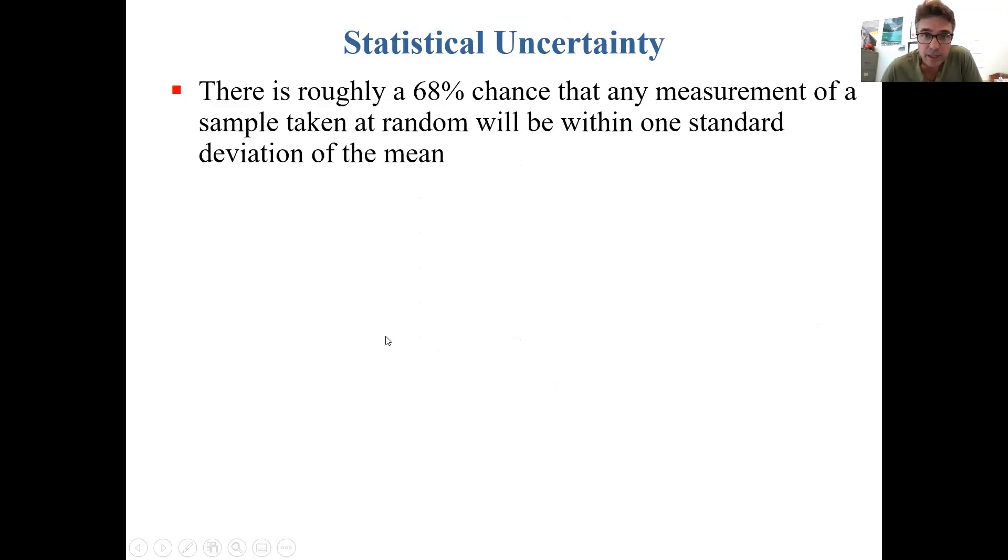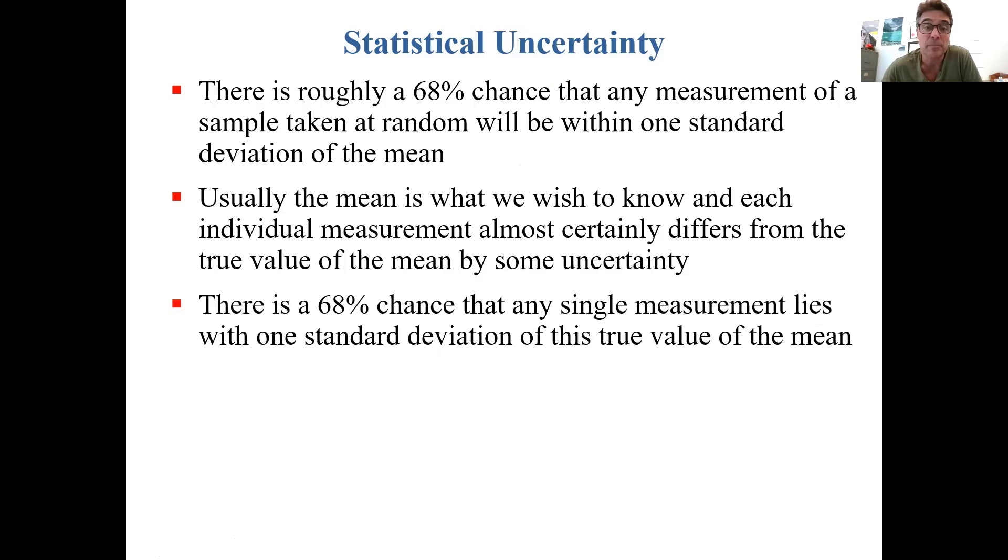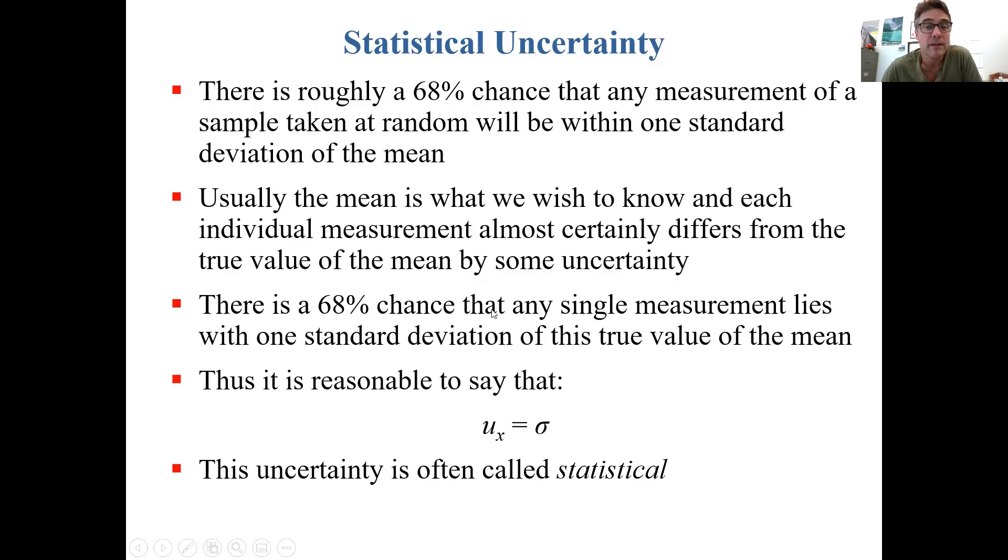There is roughly a 68% chance that any measurement of a sample taken at random will be within one standard deviation of the mean. Usually the mean is what we wish to know, and each individual measurement almost certainly differs from the true value of the mean by some uncertainty. There's a 68% chance that any single measurement lies within one standard deviation of this true value of the mean. Thus it is reasonable to say that the uncertainty in x equals sigma. This uncertainty is often called the statistical uncertainty.